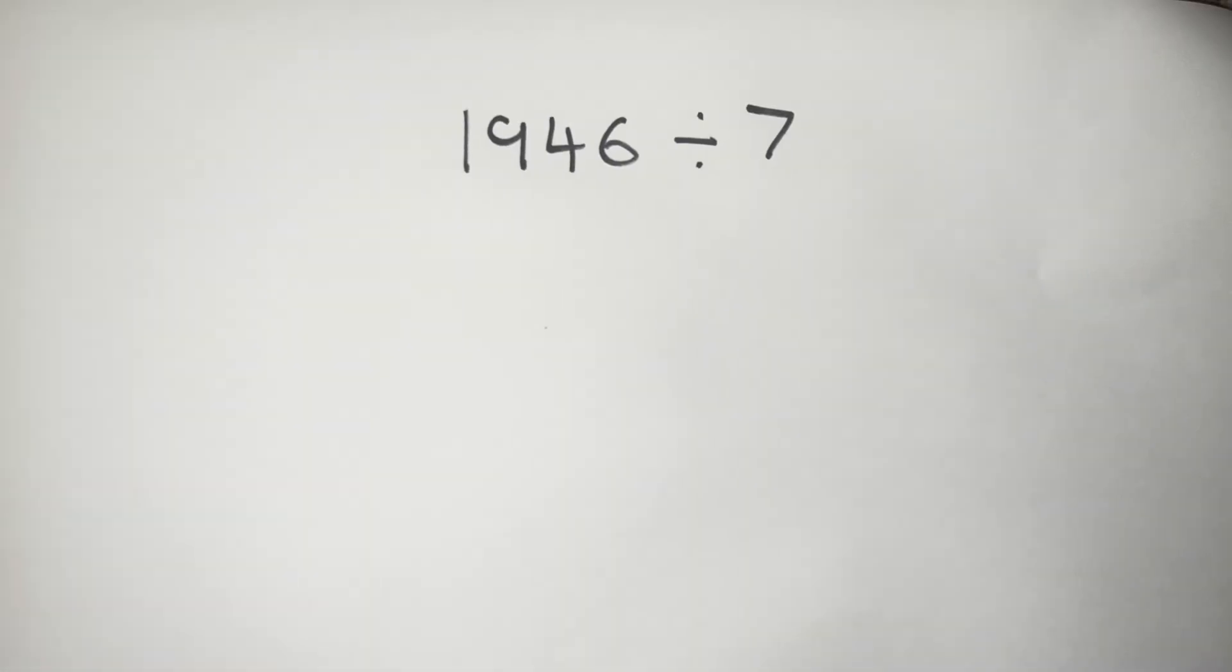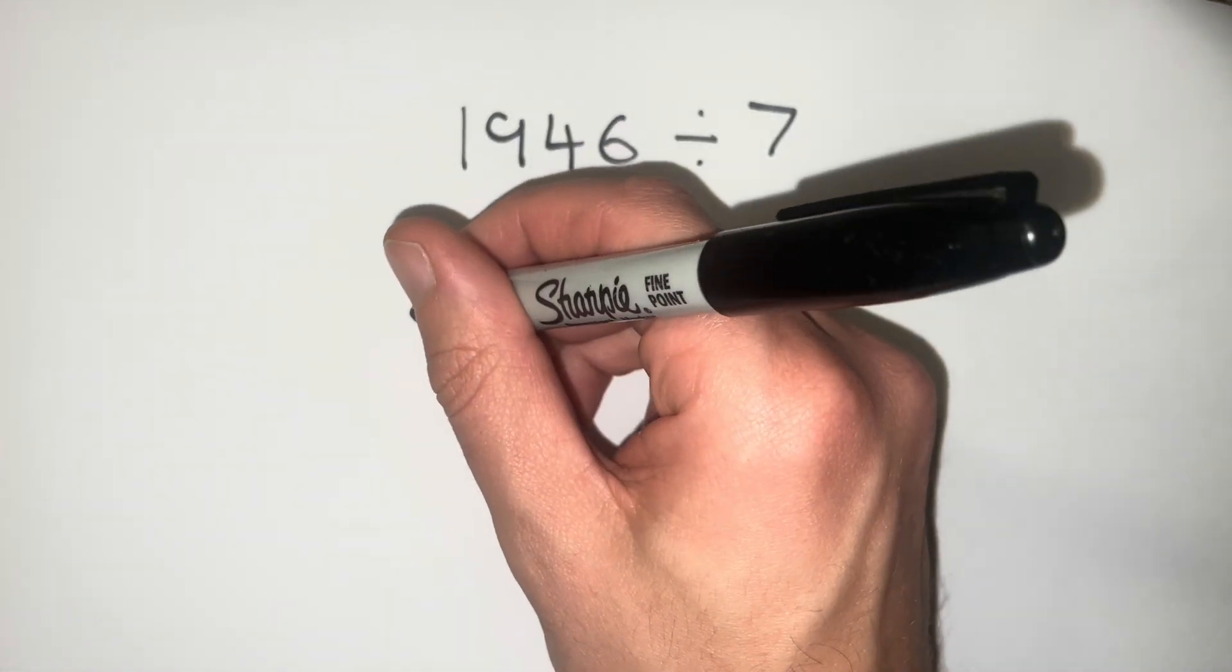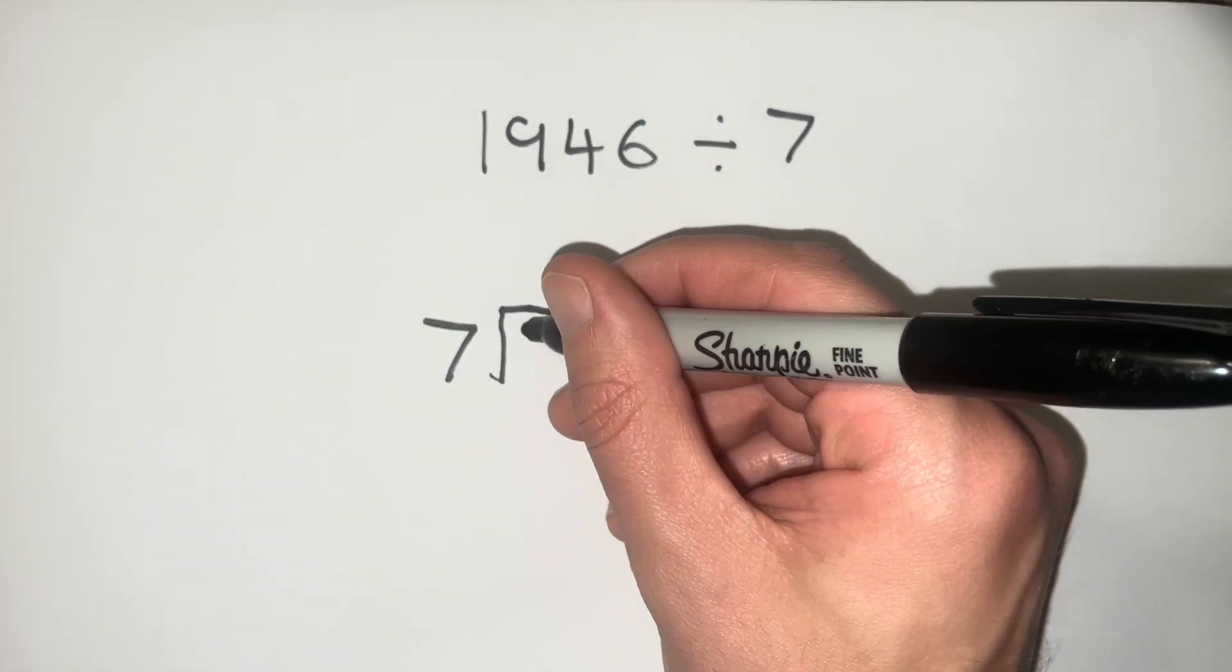One final example we're going to look at is 1946 divided by 7. And we see how we can use this for bigger numbers as well. So we're going to put our 7 on the outside, draw our bus stop in, and we have 1946.